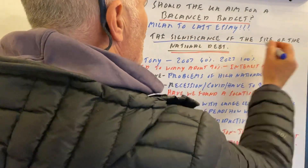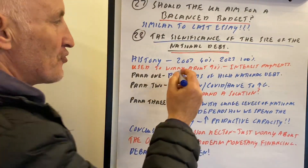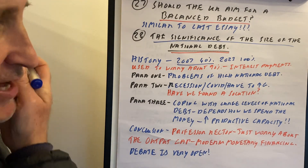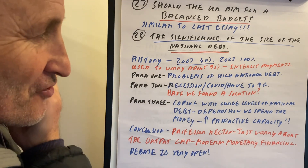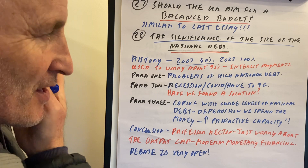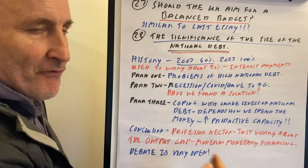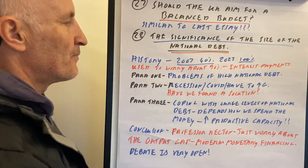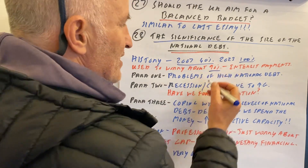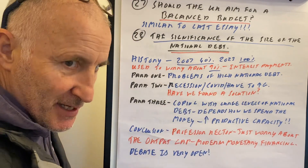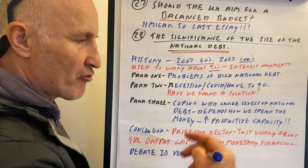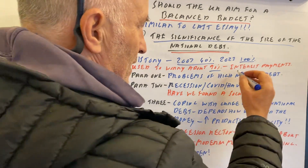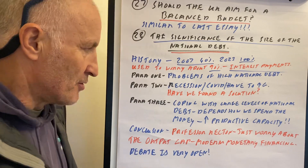The significance of the size of the national debt: in 2007 it was 40%, by about 2015 it was about 60%, and right now after Covid it shot up to 100%. We used to worry about a 90% deficit, because if the interest payments are greater than the rate of economic growth then supposedly our economy becomes unsustainable.